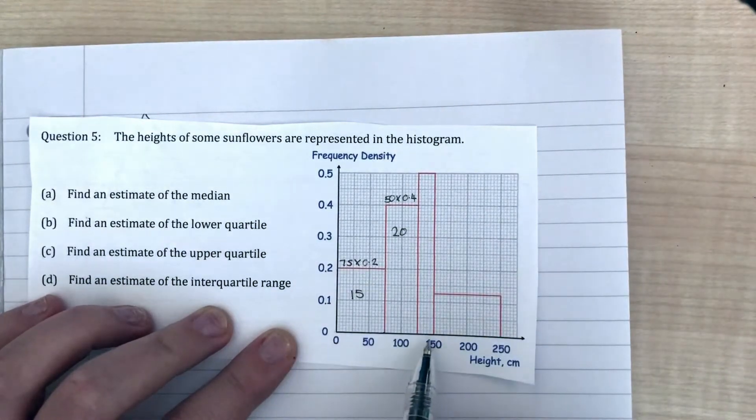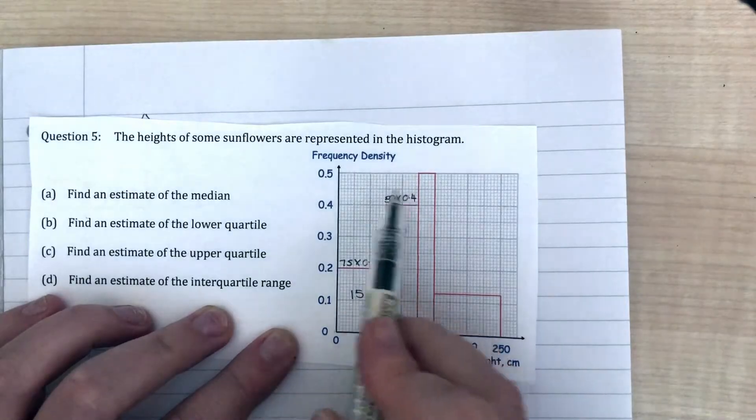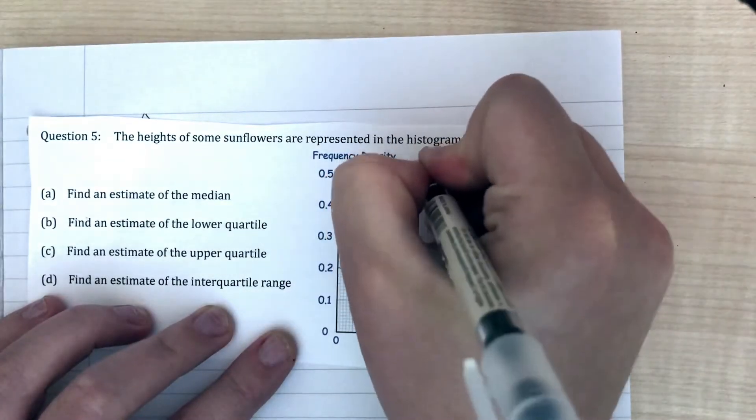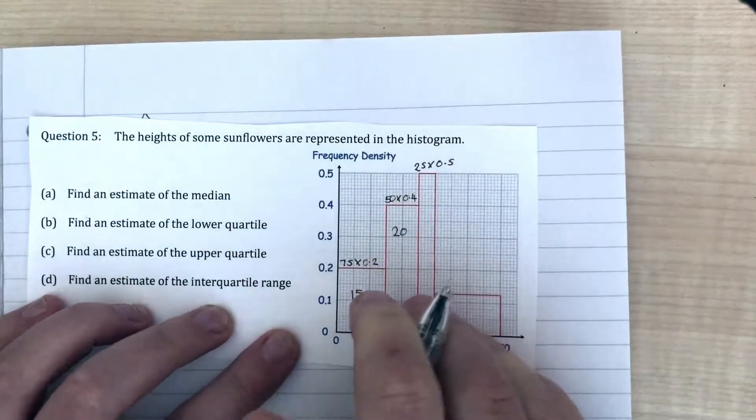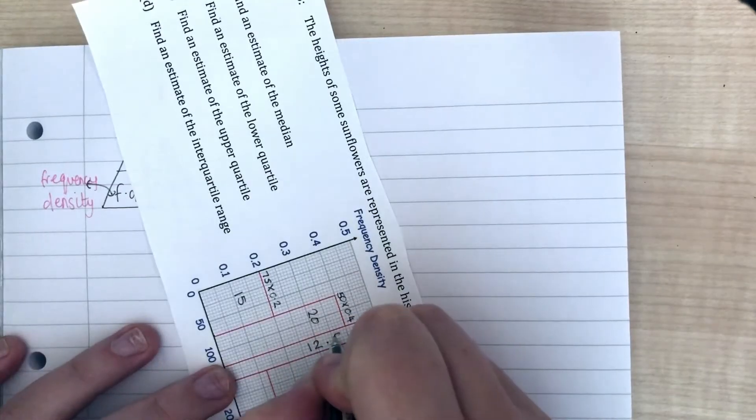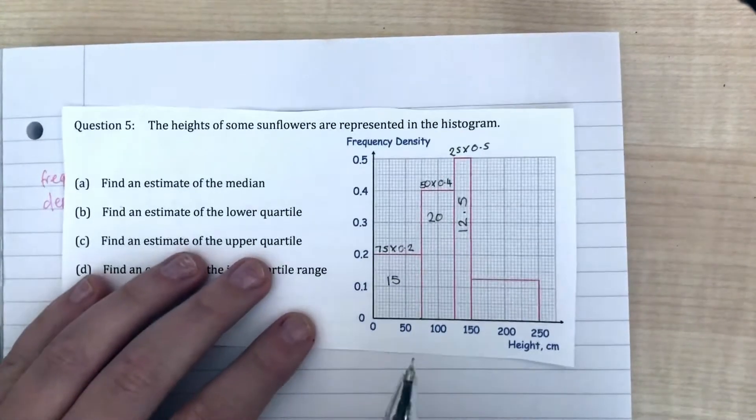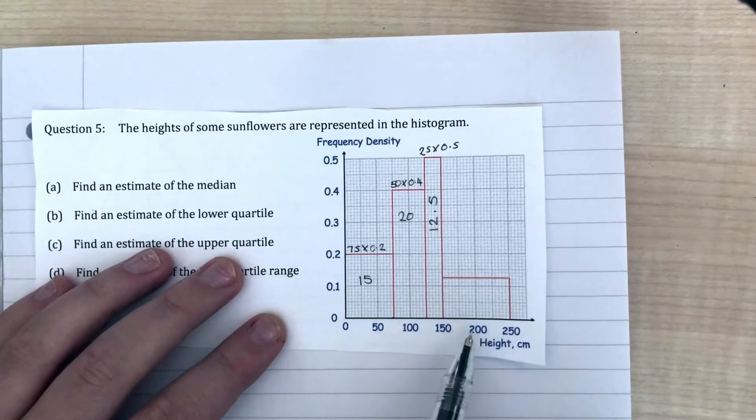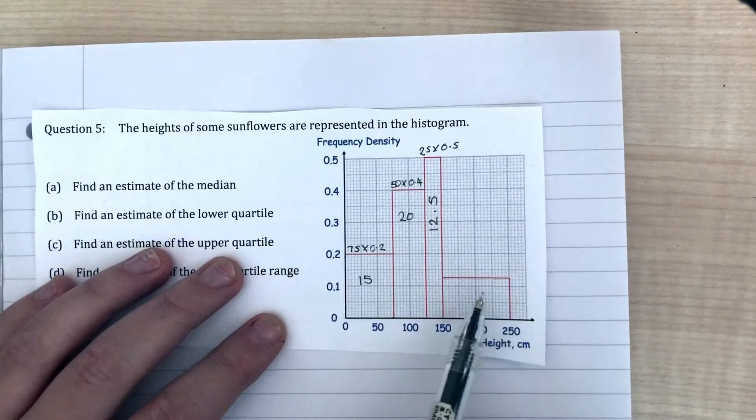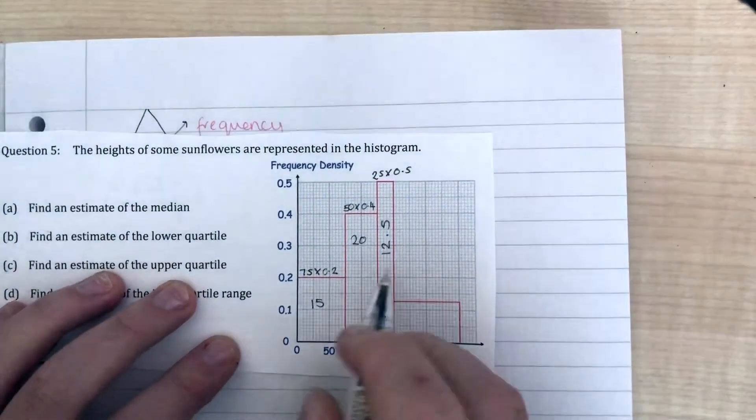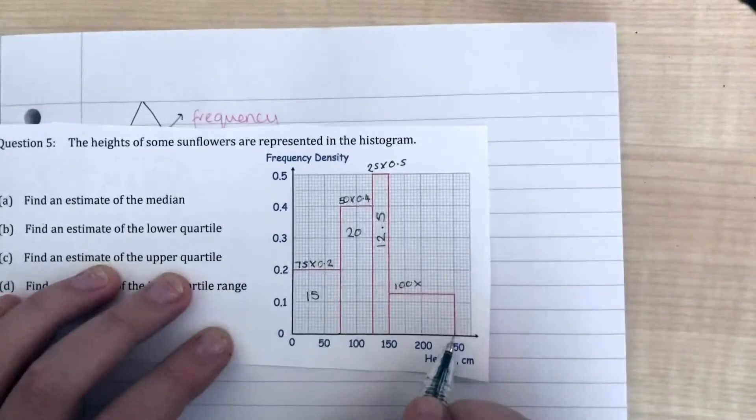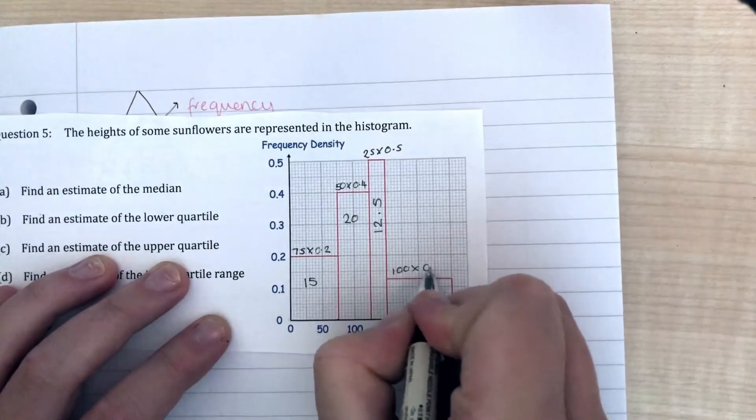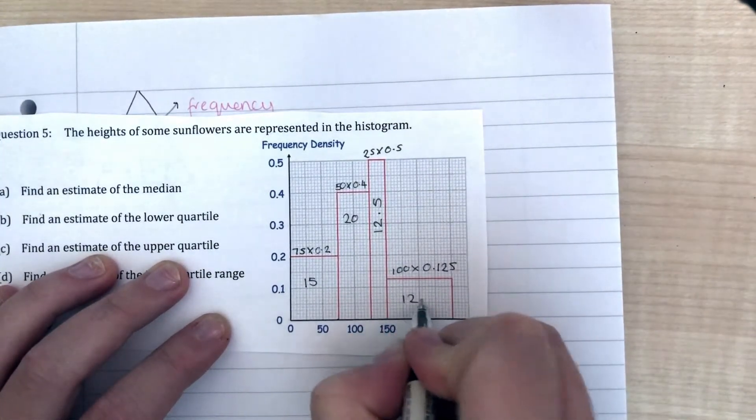This block, my frequency density is 0.5 and my class width is 25. So 25 times 0.5 gives us 12.5 sunflowers in that one. My last bar goes between 150 and 250, so there's 100 centimeters as a class width, and it's going up to a frequency density of 0.125. So again there's 12.5 sunflowers in that class.